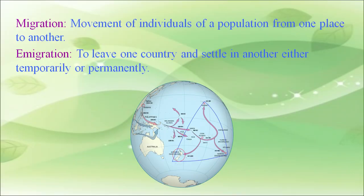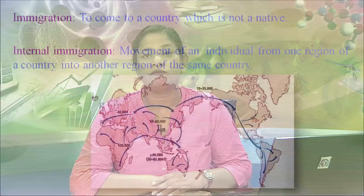Migration is the movement of individuals of a population from one place to another. Immigration is to leave one country and settle in another, either temporarily or permanently. Internal migration is the movement of an individual from one region of a country into another region of the same country.